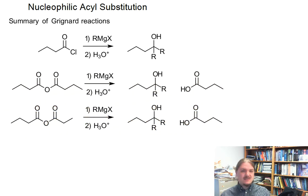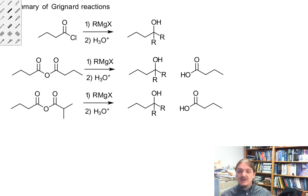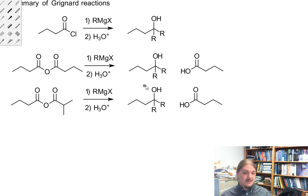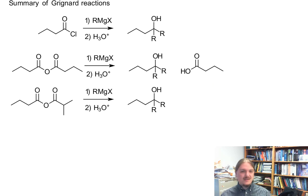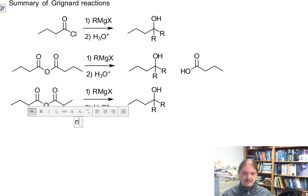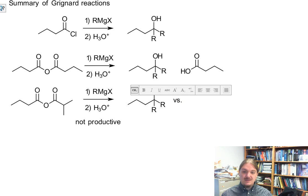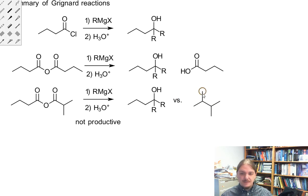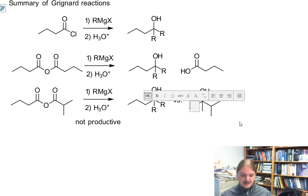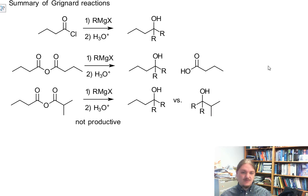Anhydrides have some of the same limitations in their reactions with Grignard reagents as their reactions with other species. Once you have a mixed anhydride, this reaction is considered to be not productive unless you have some other ability to influence the outcome, because there are two possible tertiary alcohols that could be generated based on two possible carbonyl groups reacting and the other one being leaving groups, so we're not productive here.